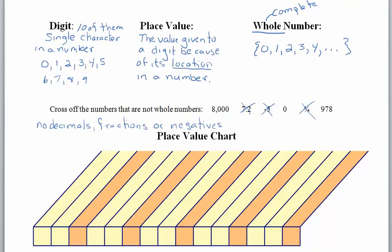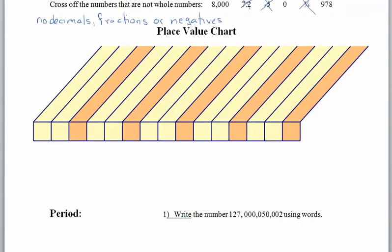Here we have our place value chart, and you should know all the different names for these place values. On the far right we have the ones place. After the ones comes the tens place, then comes the hundreds place. Then we have thousands, ten thousands, and hundred thousands. And if you're starting to see a pattern, that's because there is one — we always have this ones, tens, hundreds thing happening with possibly a trailing word. The next one is millions.